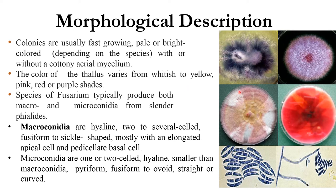Morphological description. Colonies are usually fast growing, pale or bright in color, with or without colonial aerial mycelium. The color of the thallus varies from whitish to yellow, or it could be pink, red, or purple shades. Some species of Fusarium typically produce both macro and microconidia from slender phialides.